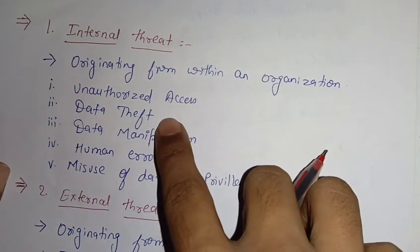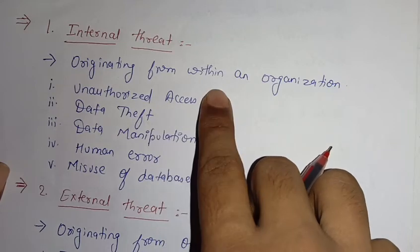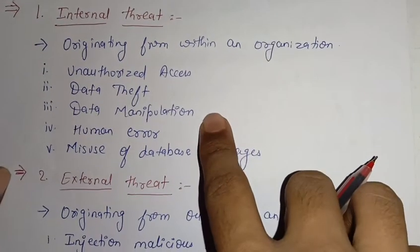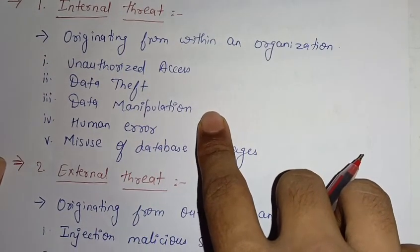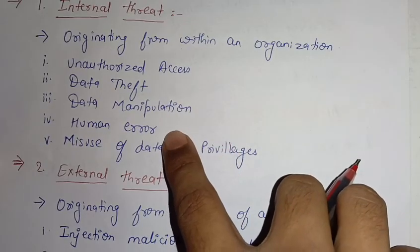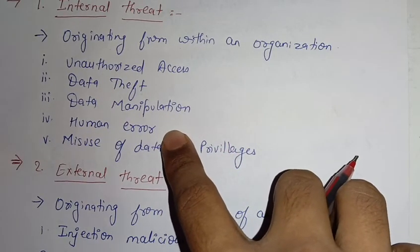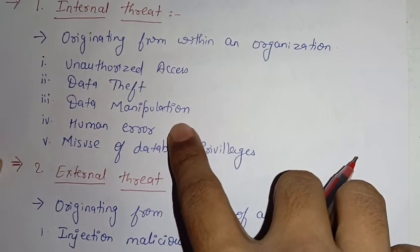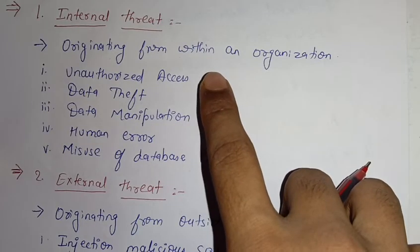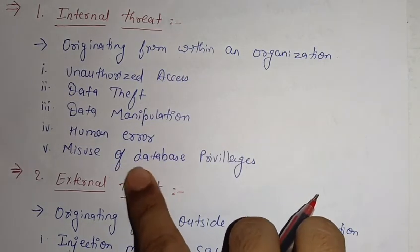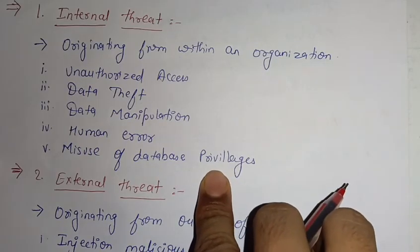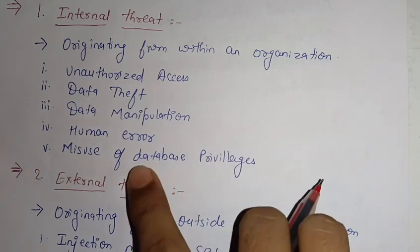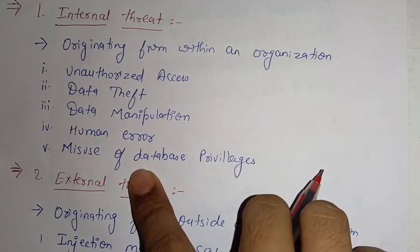The second one is data theft — sometimes the internal person is trying to steal the data of an organization through various means. The third one is data manipulation — they are manipulating the data. The fourth is human error — sometimes things happen by mistake, which is also considered a threat in database security. The fifth is misuse of database privilege — whatever privileges they have to sign in or authorize access, they sometimes misuse that information.